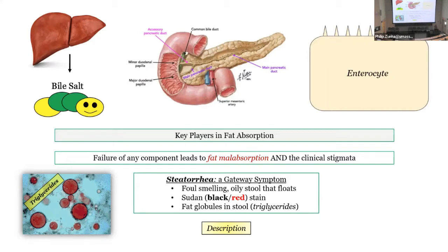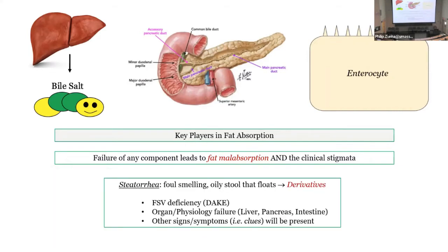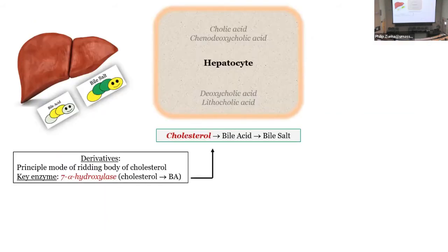Steatorrhea is the gateway symptom, and the derivatives involve fat-soluble vitamins and organ physiology. Now let's go to the hepatocyte. The primary bile acids are cholic acid and chenodeoxycholic acid; secondary bile acids I don't see as that important. What is important is how we make bile acids and bile salts.